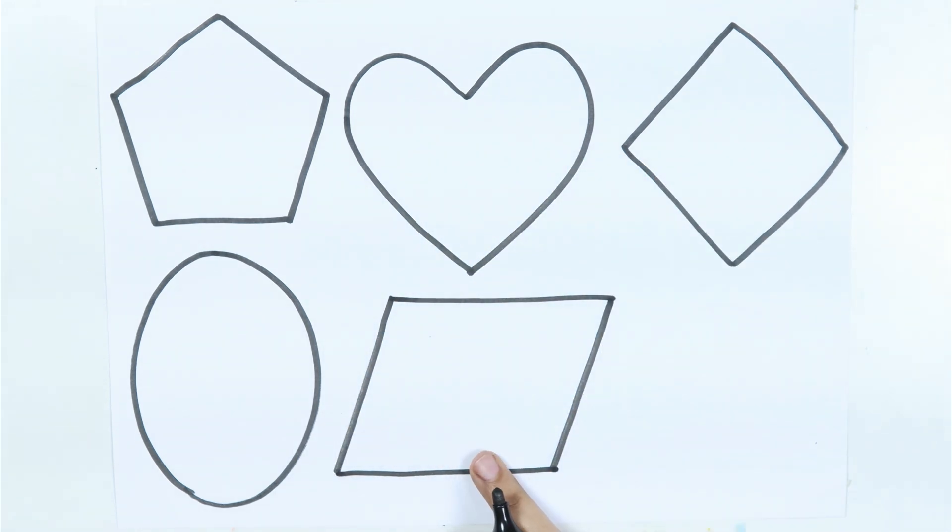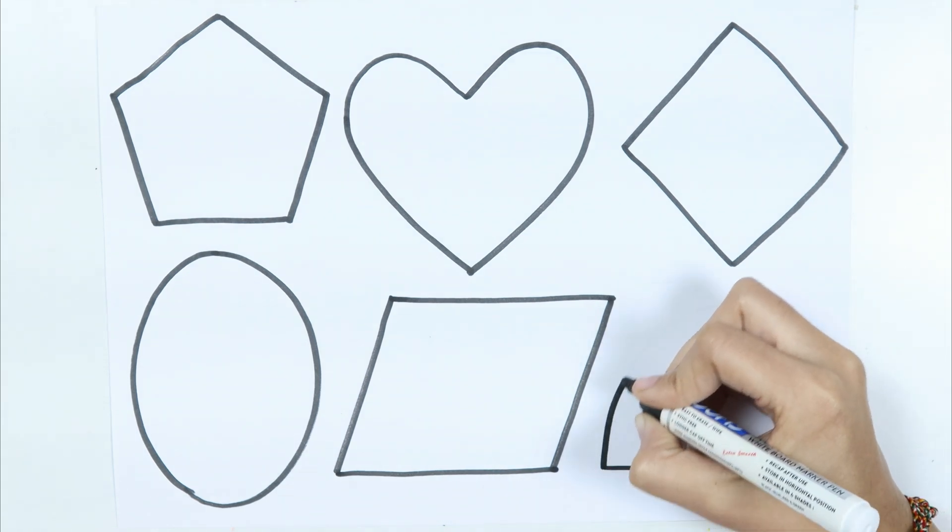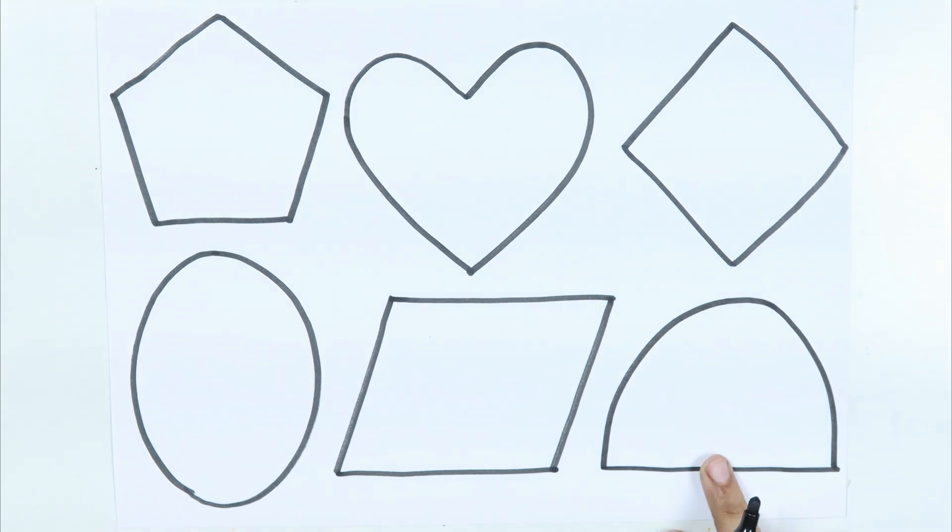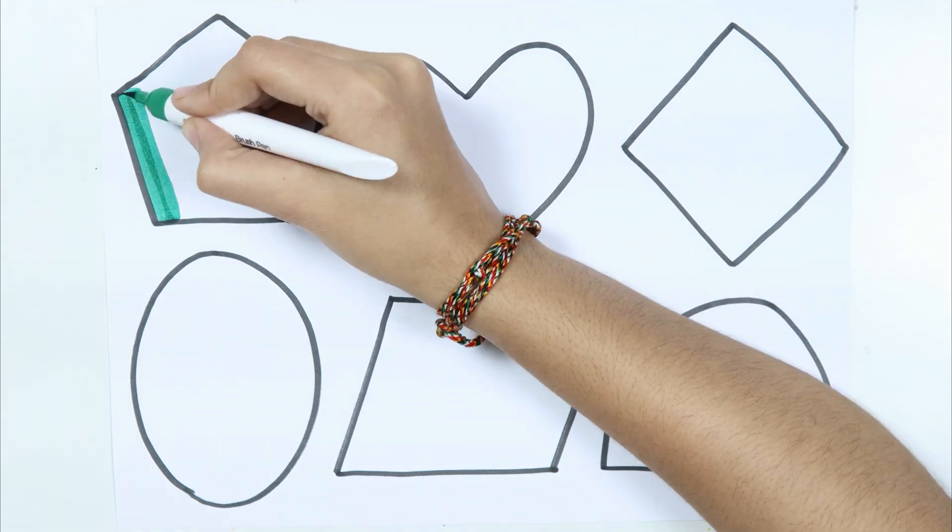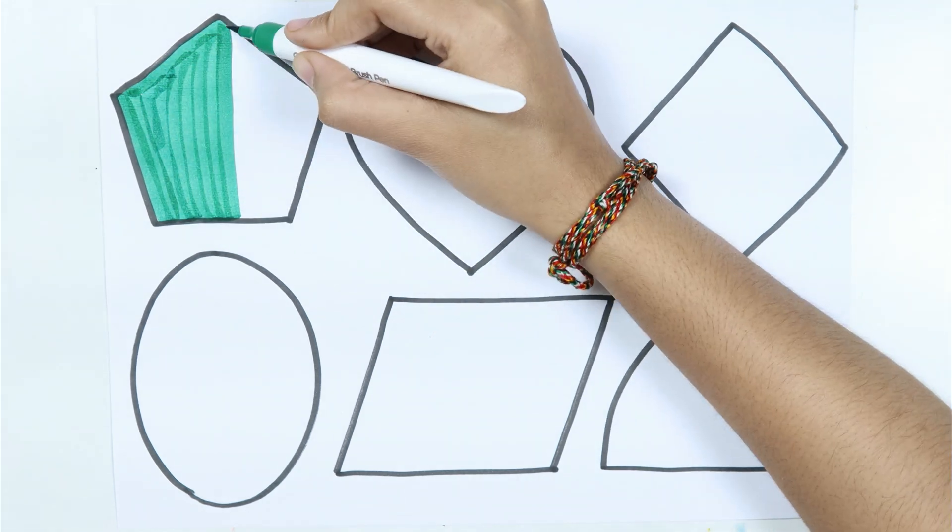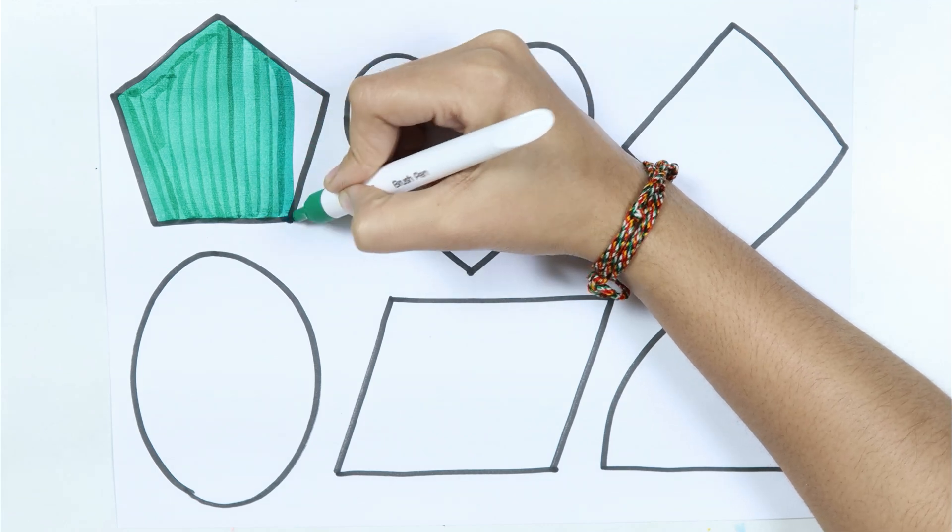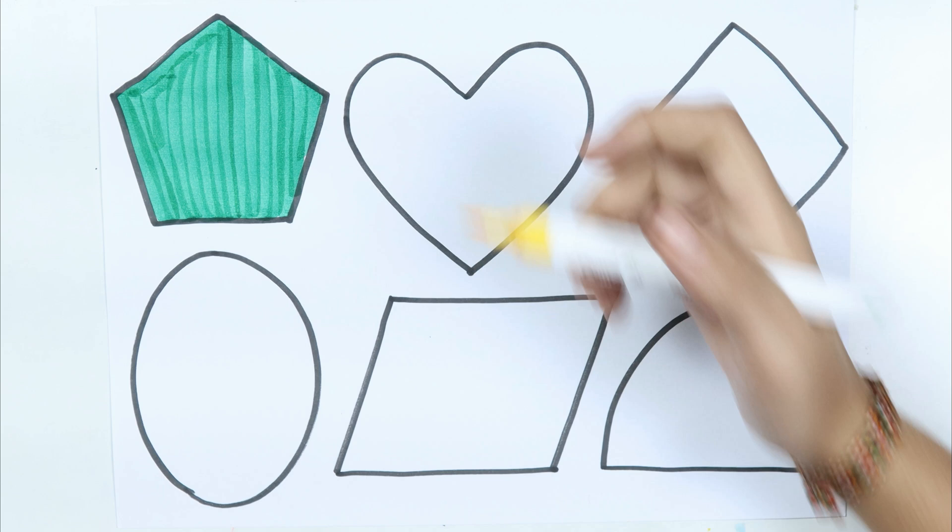Ellipse. Parallelogram. Circle color. Dark green color. Up above the world so high. Like a diamond. Pentagon. Yellow color.